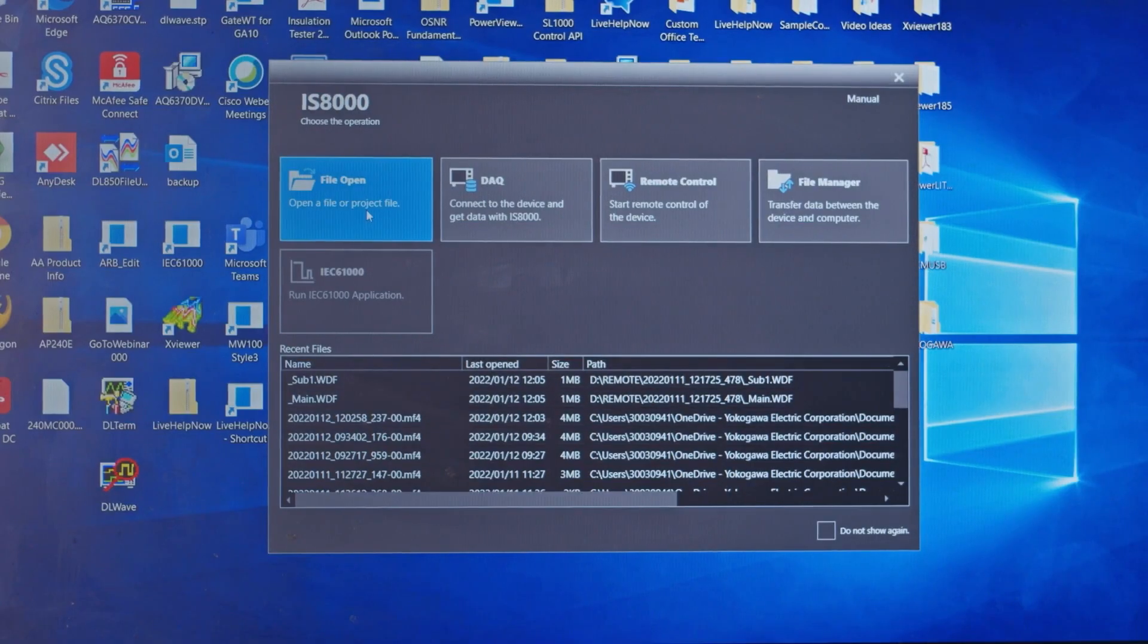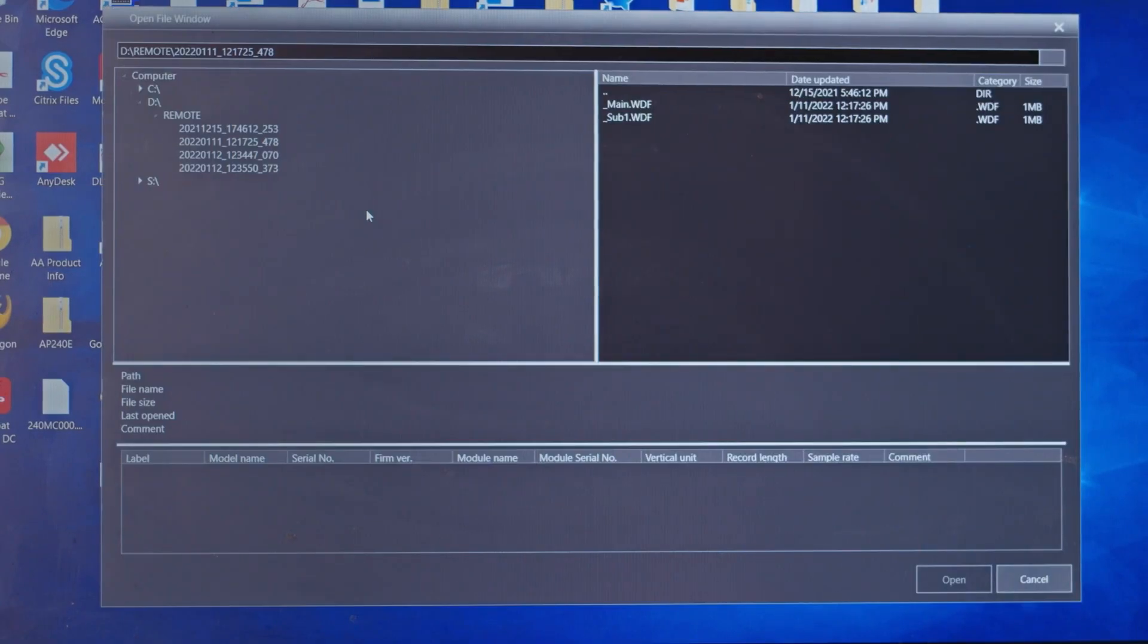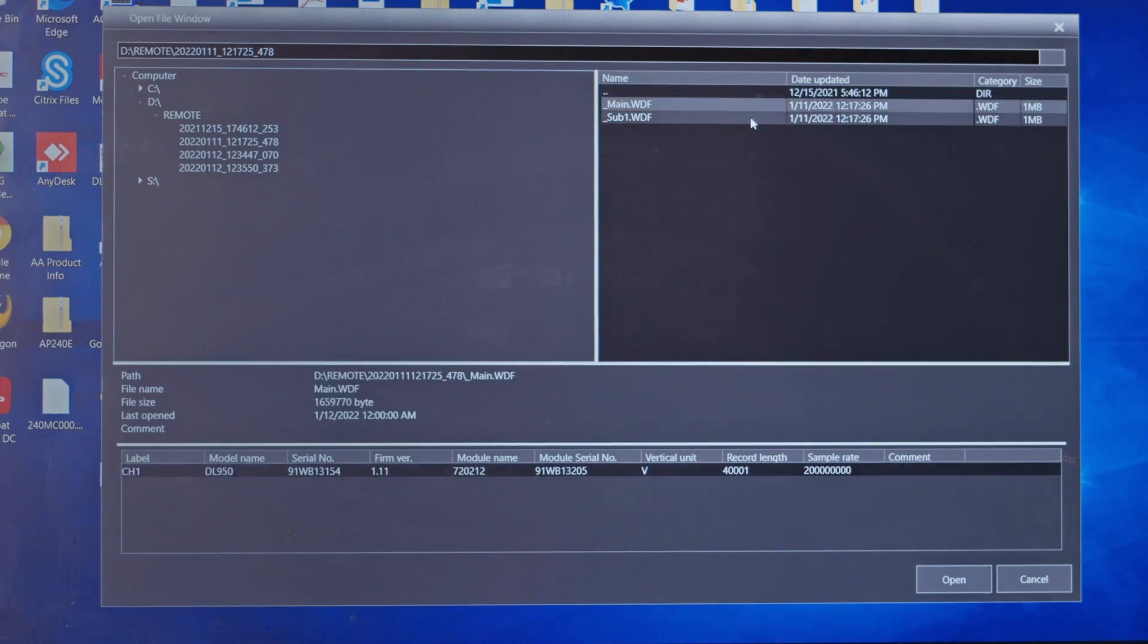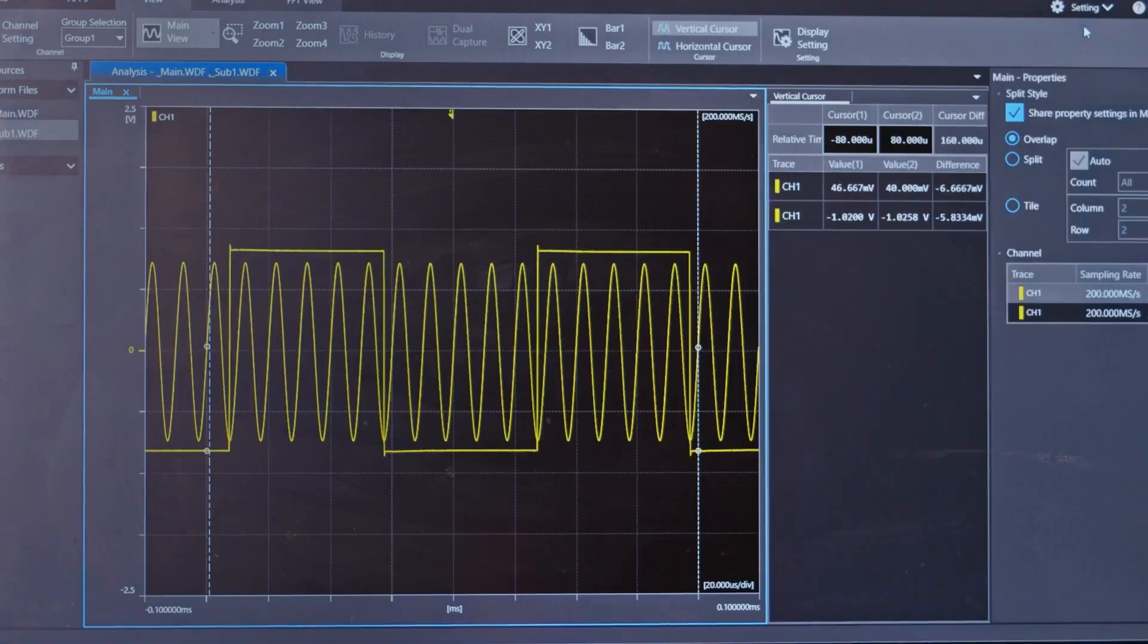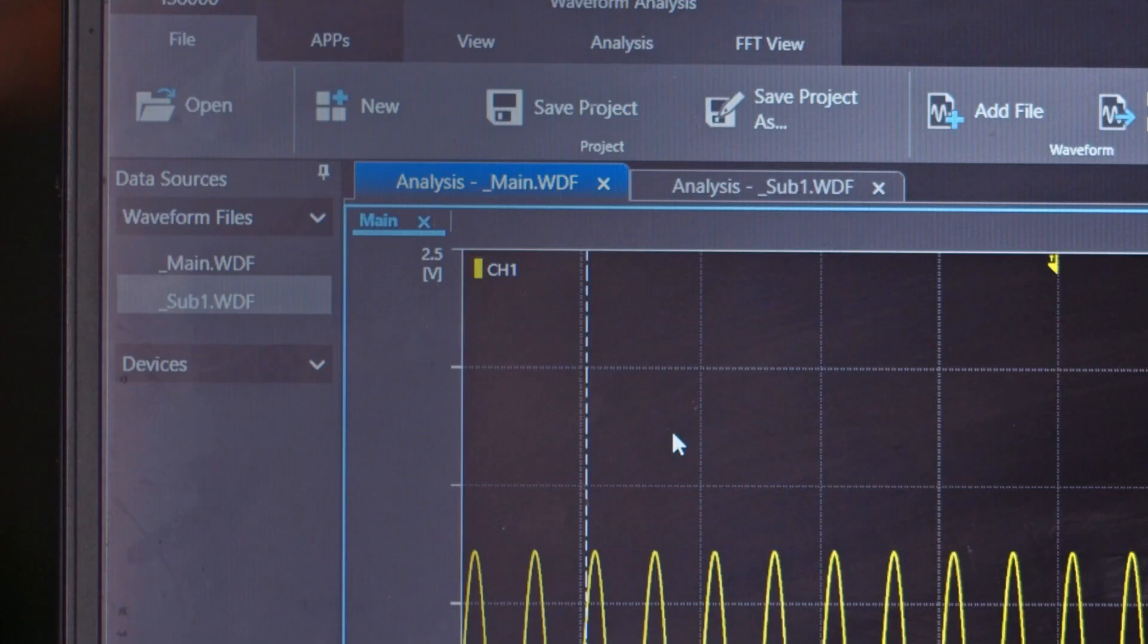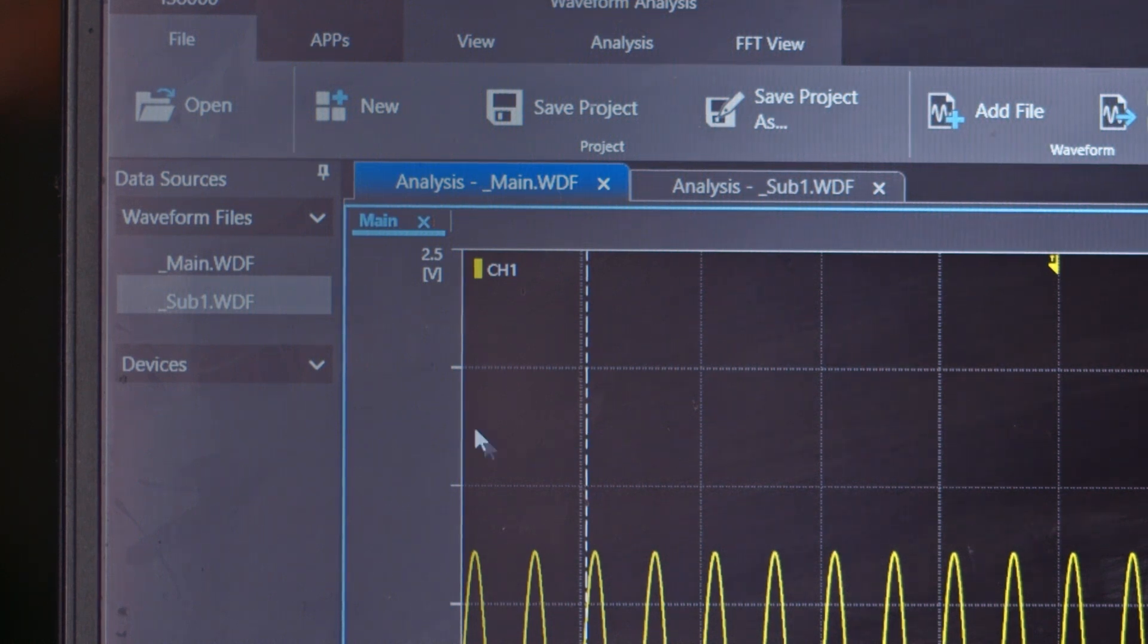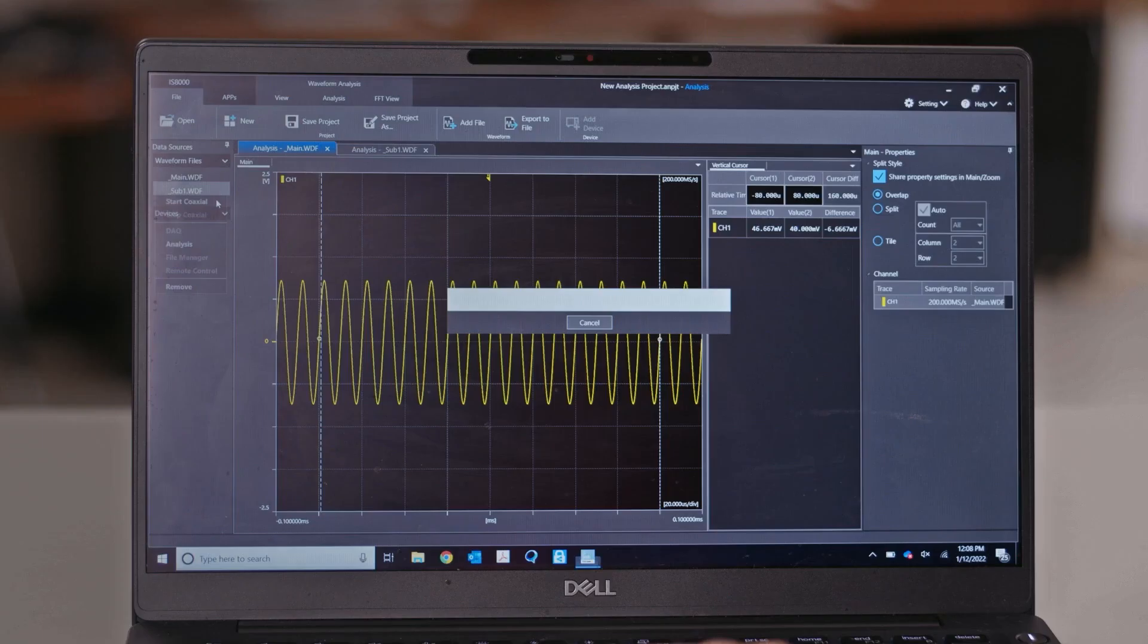There are two ways to see all the waveforms from all the DL950s on one screen with one time base. The first is to select multiple files at once by holding down the control key and clicking each file. Keep in mind you may want to move the files from the DL950s to one folder to make this easier. The other way is to open the files in separate tabs as shown earlier. Press the three dots next to the waveform file names and press Start Coaxial.